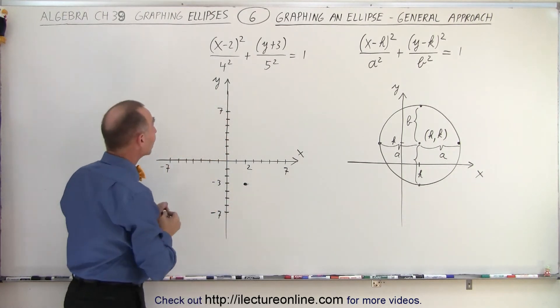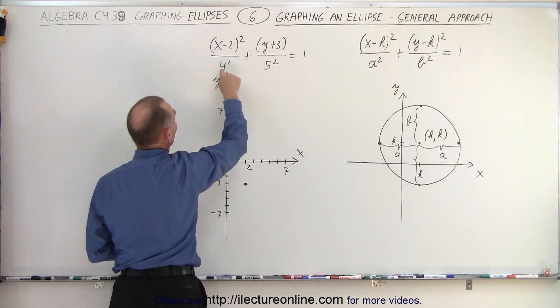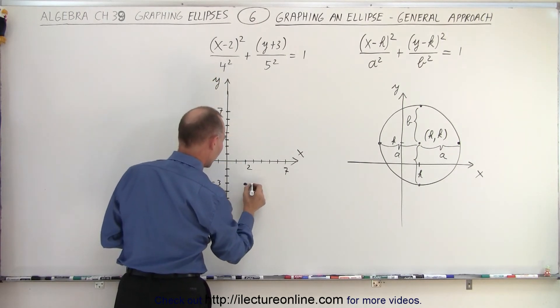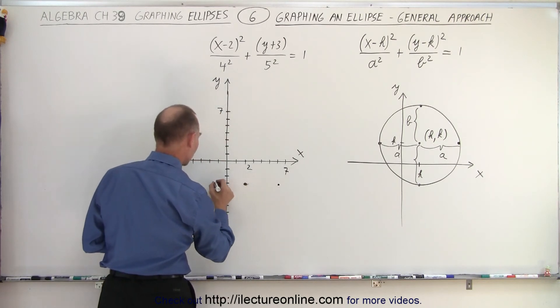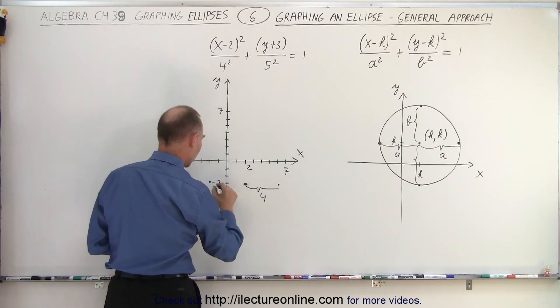So now we look at the first term right here, associated with the x. We're going to go left and right a distance four. So that means we're going to go right four, one, two, three, four. And we're going to go left four, one, two, three, four, right there. So you know that this distance here is a distance of four, and this distance here is a distance of four as well.